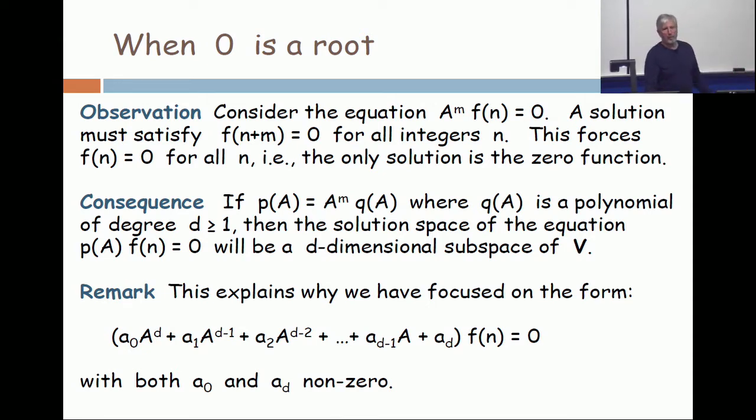But in the advancement operator world, the root zero plays a special role. So look at the equation A to the m on f(n) equals zero. That's just the kind of thing we've been talking about, but now A is A minus zero, so the root here is zero.